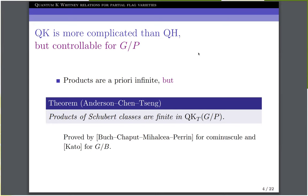But these complications tend to be controllable for G mod P. It was proved by Anderson, Chen, and Zeng that when you multiply Schubert classes and expand in quantum K-theory, there will only be finitely many Q powers. For Grassmannians and flag varieties, this was proved by Buch, Chaput, Mihalcea, and Perrin, and Kato proved it for complete flag varieties.